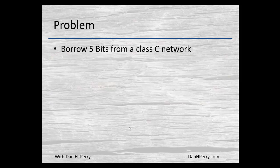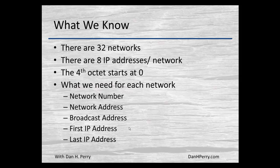In the next example we're going to borrow five bits from a Class C. With five bits borrowed, there are 32 networks and eight IP addresses per network.